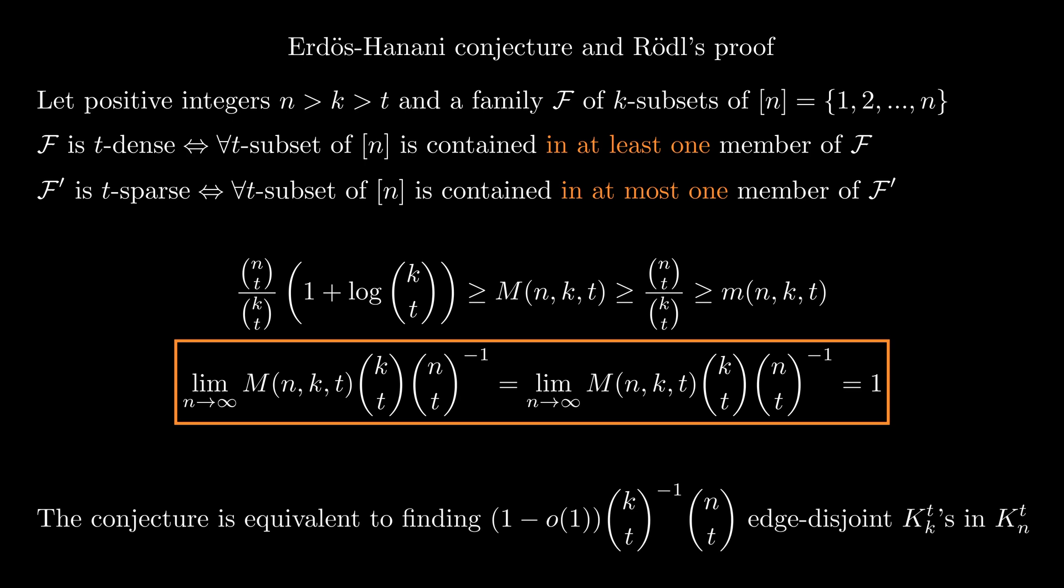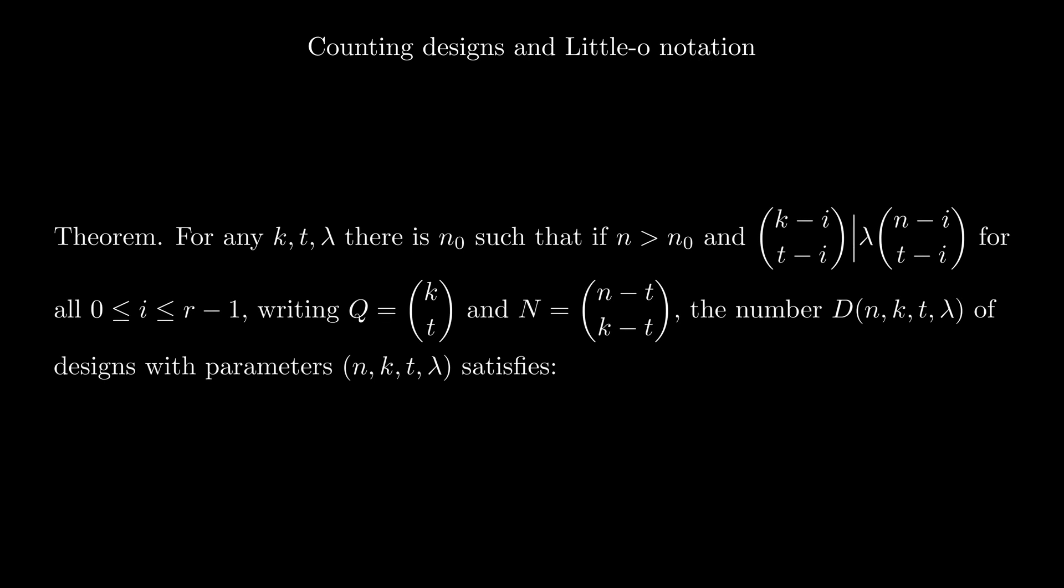Note that we don't have the exact number of the edge disjoint t-graphs on k-vertices in t-graphs on n-vertices. That is due to that O of 1. We'll explain in a few moments its significance. As for now, we don't have the exact number of designs given its parameters, but we have some estimates.